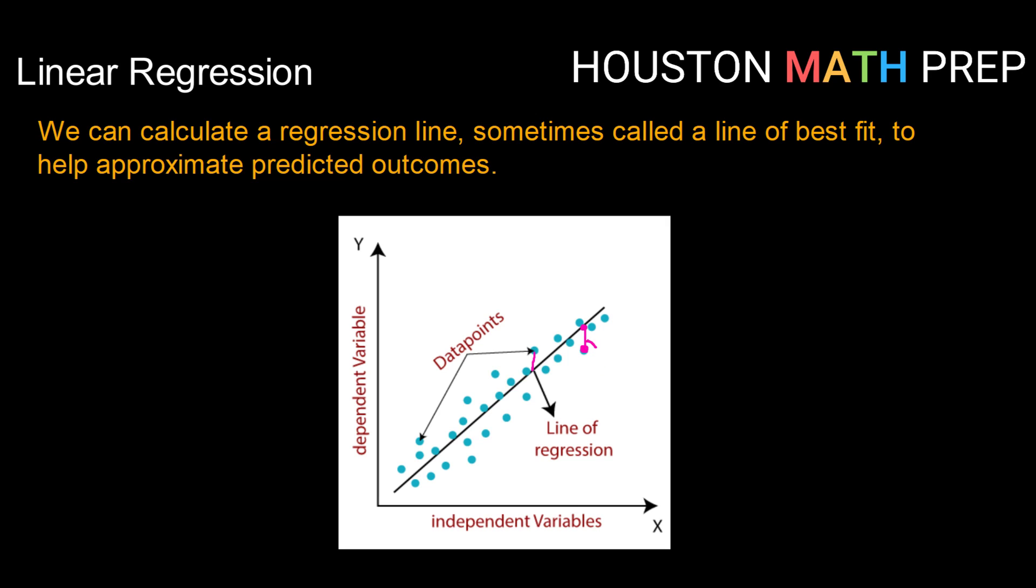So this distance right here is called a residual. And when your calculator comes up with this line of best fit, it is doing some complex calculations to make a line so that the residuals overall are at a minimum. So that's why we call it the line of best fit. It fits the data best. It minimizes those residuals.